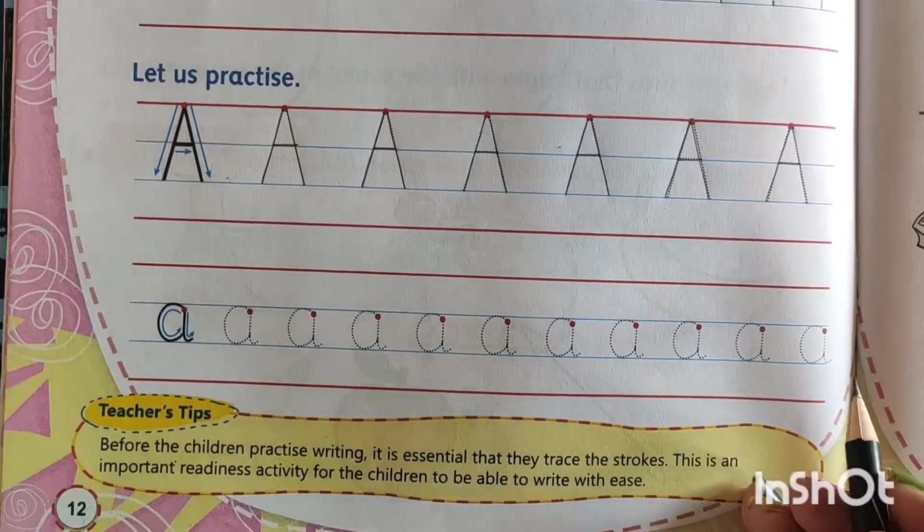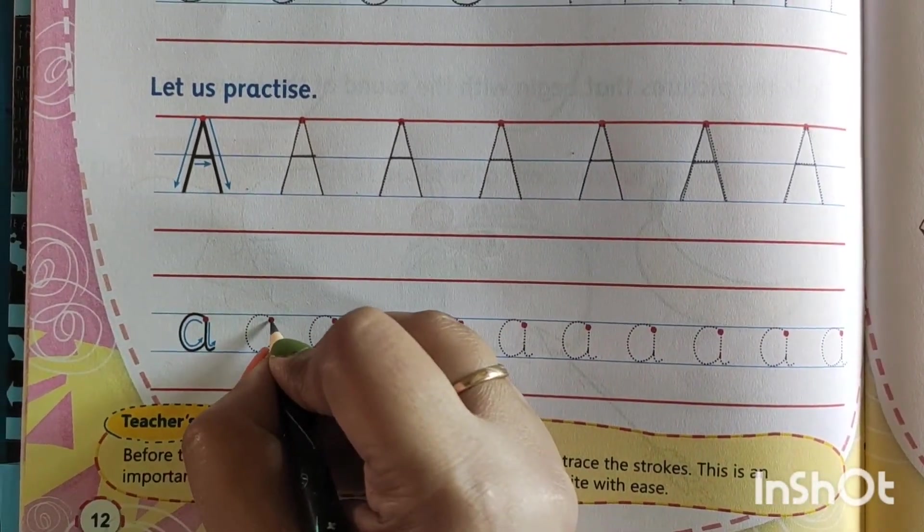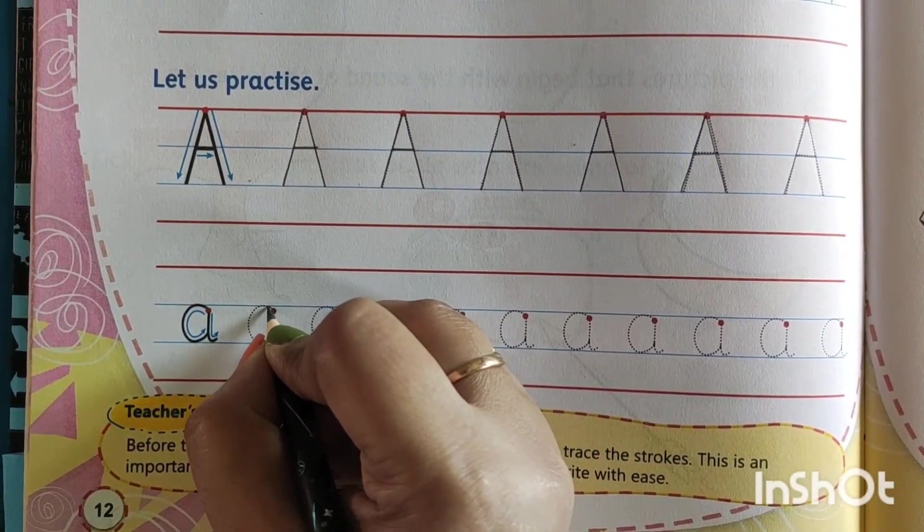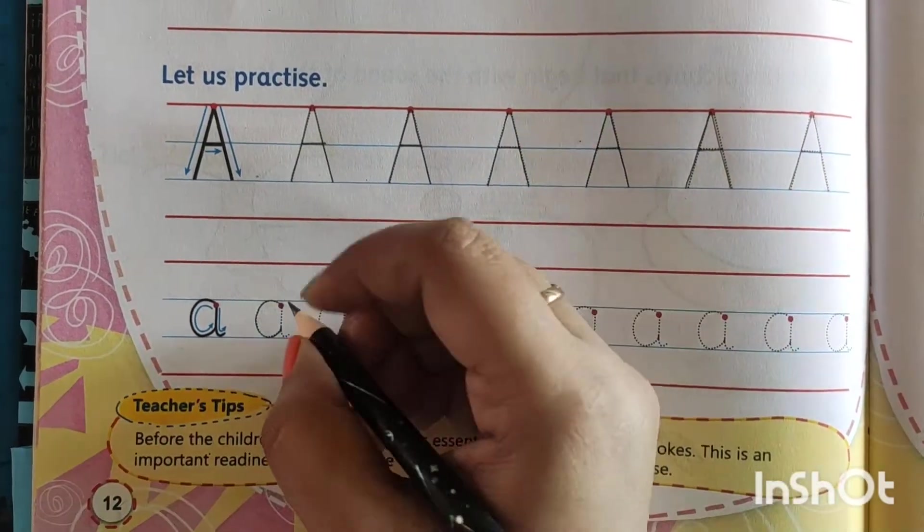Now we have to draw that small a. How it will come? From here, red point. We are starting a half circle. Stop here.